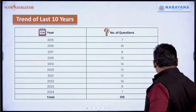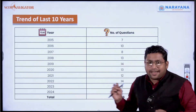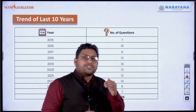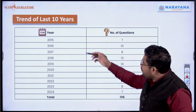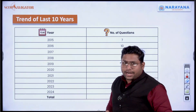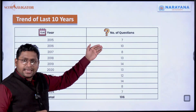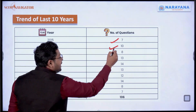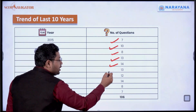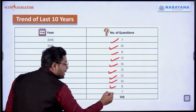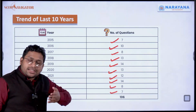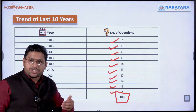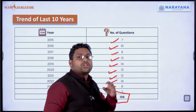Now, how important is this subject? I have data for the last 10 years of UPSC prelims papers, from 2015 to 2024. You can see how many questions have been asked: in 2015, 7 questions; then 10, 8, 13, 14, 13, 12, 14, 8, 7. So in the last 10 years, they have asked somewhere around 106 questions from the science and technology part.